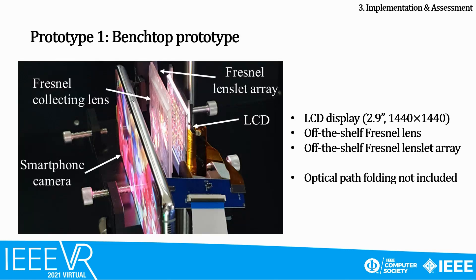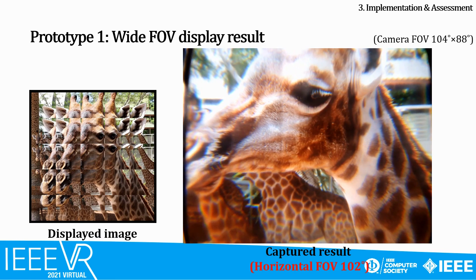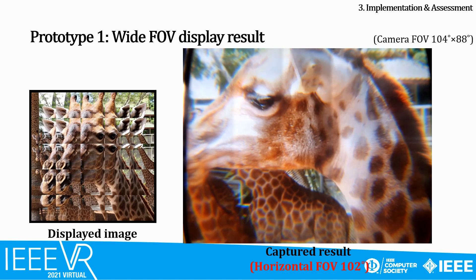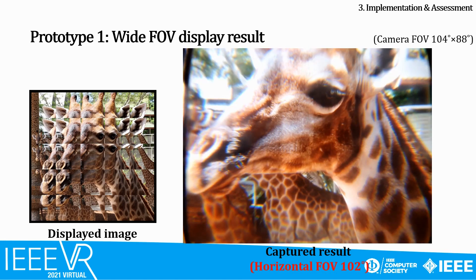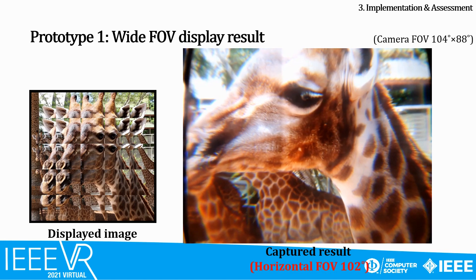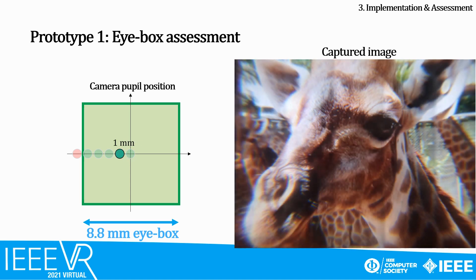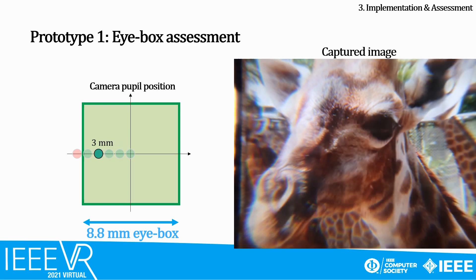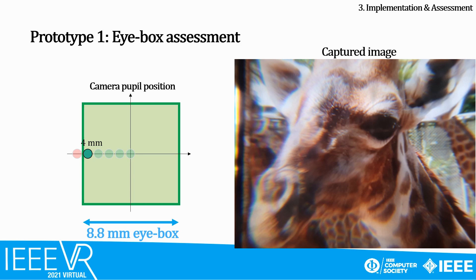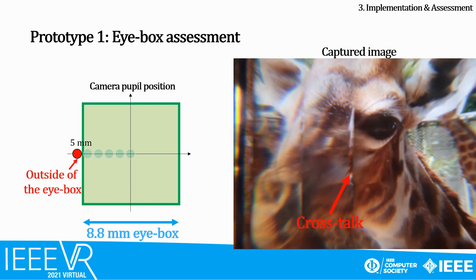We built two kinds of prototypes. The first is the bench-top prototype. It includes an LCD, an off-the-shelf Fresnel lens, and lens lid array. In this bench-top prototype, the optical path folding is not included, so there is 10 mm of air gap. The video on the right side shows the captured display result. The horizontal field of view was measured to be 102 degrees as designed. The vertical field of view was not able to be captured, but it should be the same by the symmetry of the system. Eye box can be directly measured by capturing the result while moving the camera position. Within the 8.8 mm of the eye box, we can observe a fine continuous image at all positions. When the camera deviates from the designed eye box, we observe a discontinuous image with crosstalk.